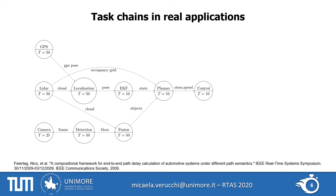When considering end-to-end latency, task chains play a big role. This is a schematic representation of the self-driving application, including the periods of the tasks — a multi-rate periodic task set. The dashed edges represent the exchange of data, not precedence constraints. A task chain is defined as a chain of different tasks that exchange data from a starting task to an ending task. For example, camera, detection, fusion, planner, and control form a task chain.